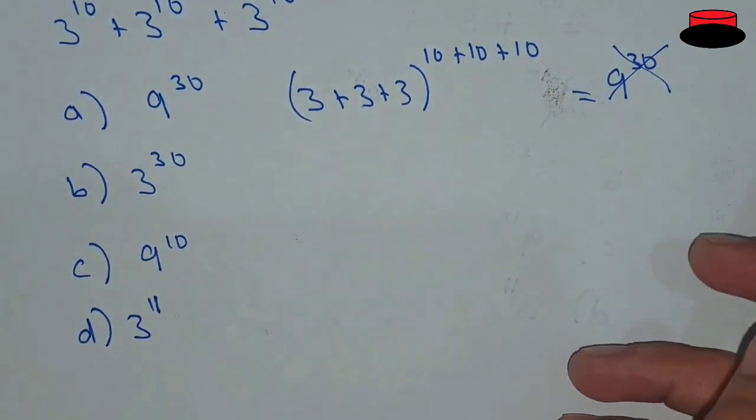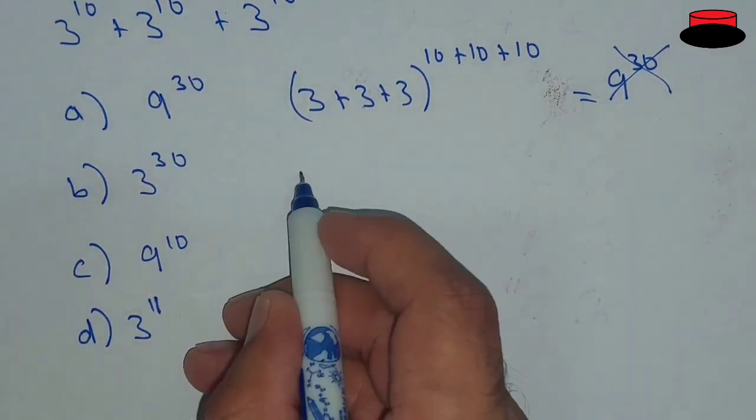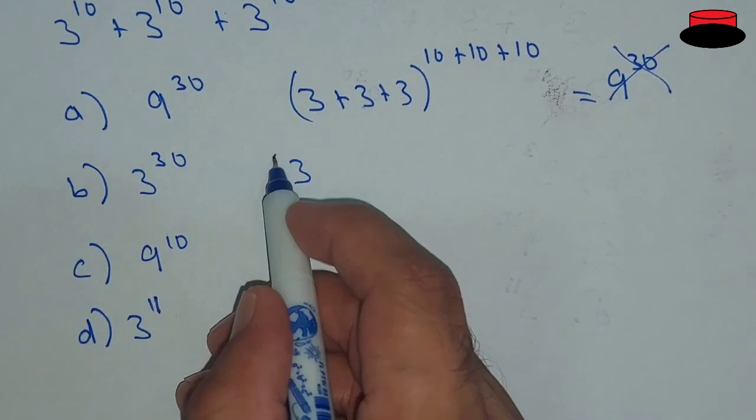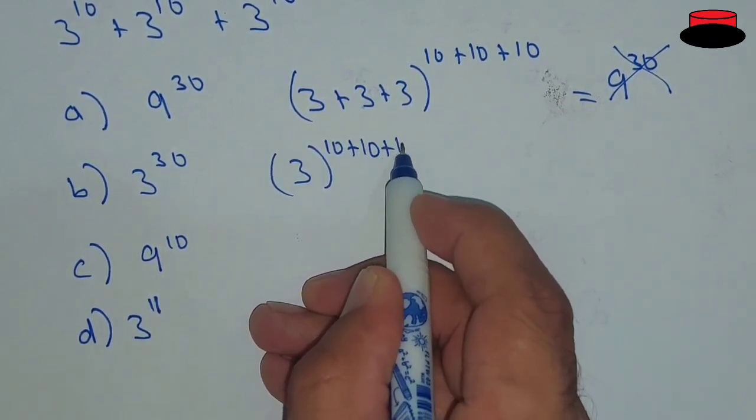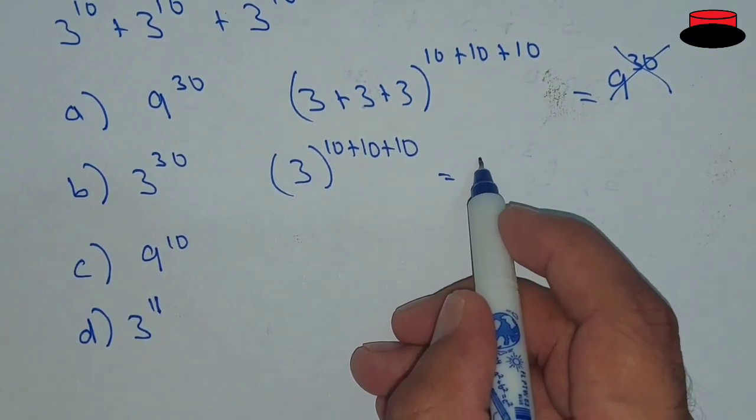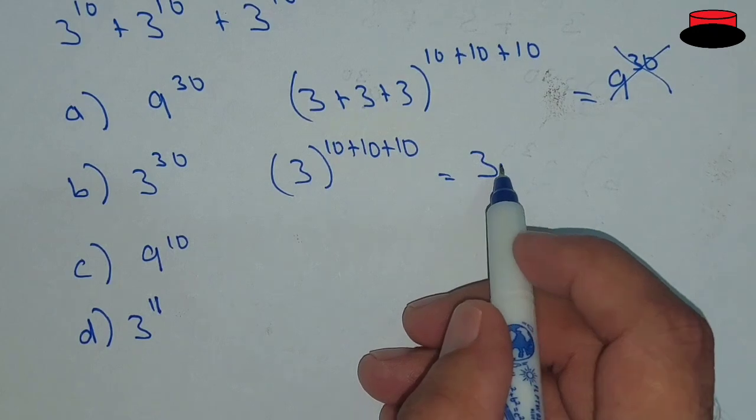Let's solve it in a different way. Here we have 3^(10 + 10 + 10), which equals 3^30. Again, this is wrong as well. It will not be solved this way.